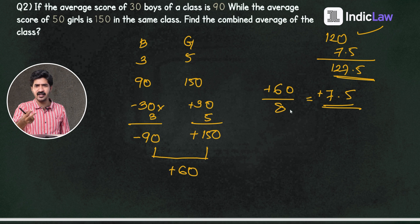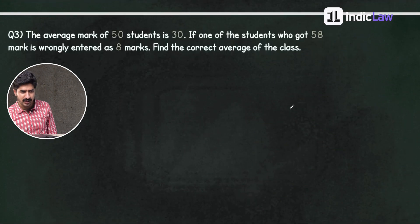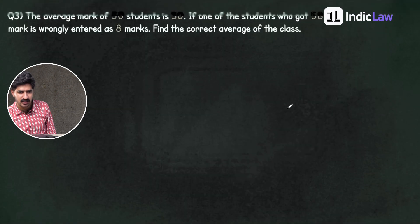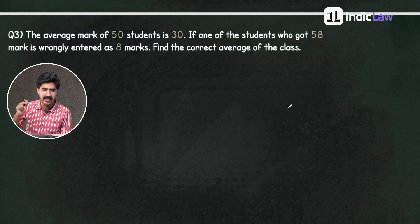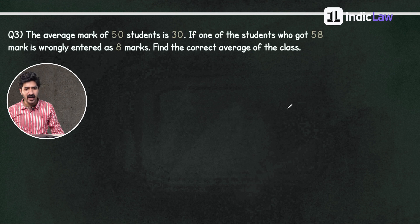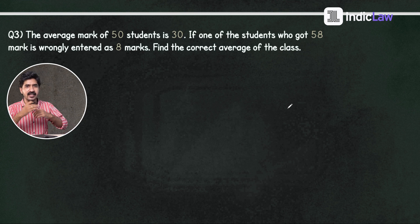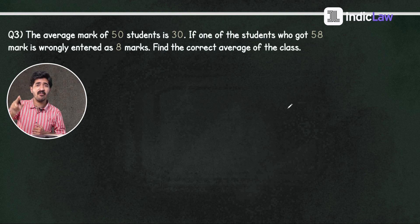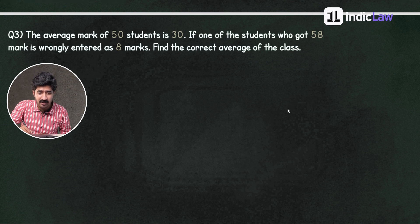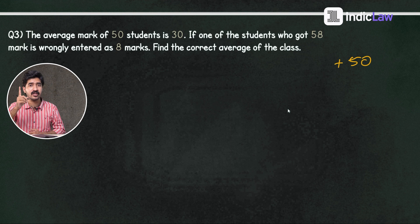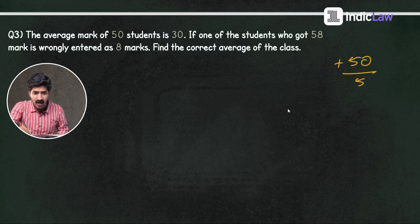The average of 50 students is 30. If one of the students who got 58 marks is wrongly entered as 8 marks, find the correct average of the class. If the average of 50 students is 30, then the total is 50 multiplied by 30, which gives the total marks.